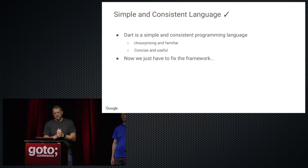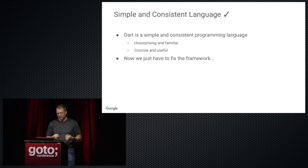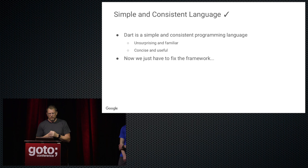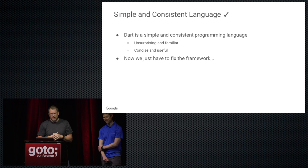We've gone through several examples in this presentation. We hope we've convinced you that having a simple and consistent programming language is important for understanding how a program executes. Having a one-to-one correspondence between what you see in source code and what executes at runtime is really important. Now we'll talk about a framework that is also important for making things simple and understandable, to make you a better programmer.